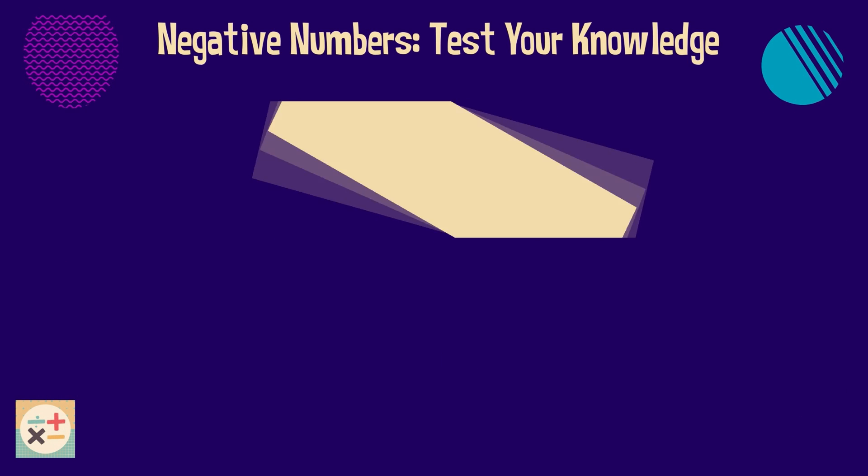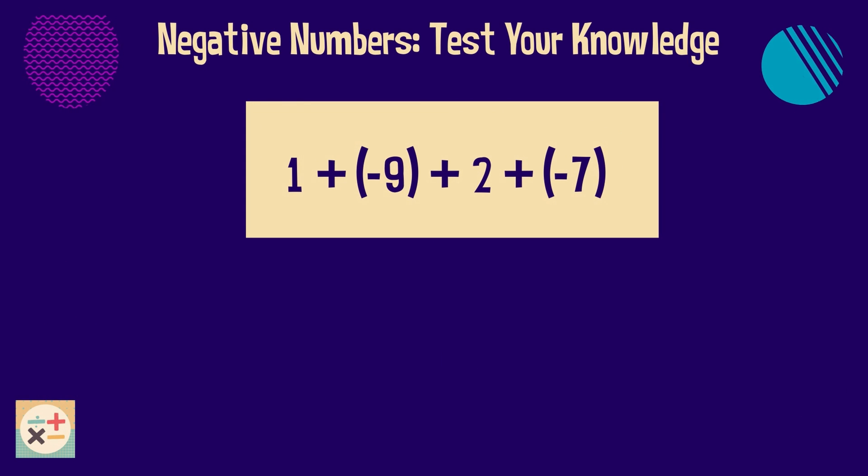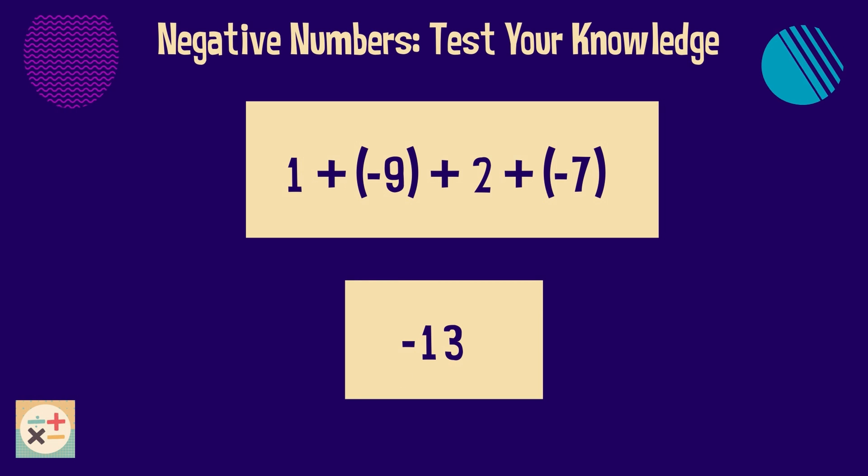Question 2. Calculate 1 plus minus 9 plus 2 plus minus 7. The answer is minus 13.